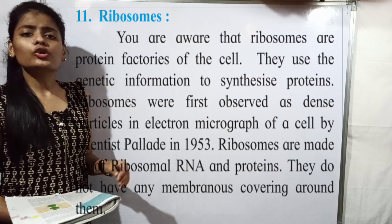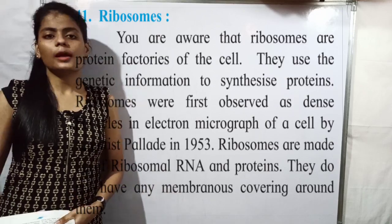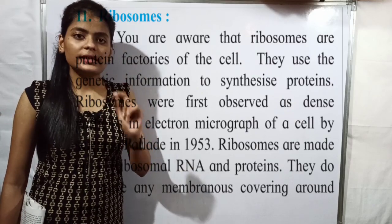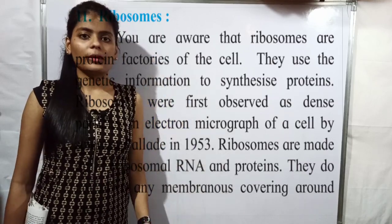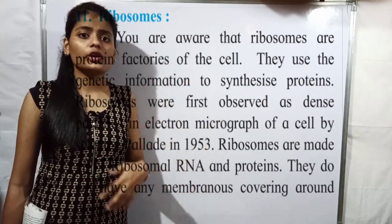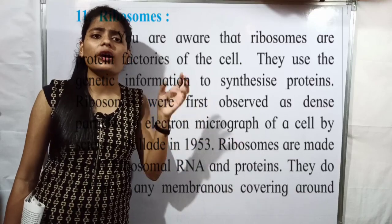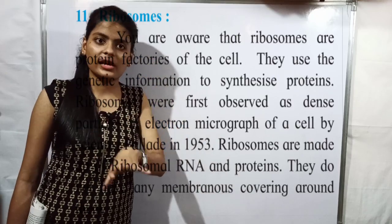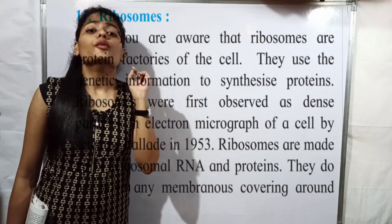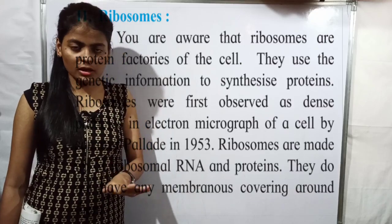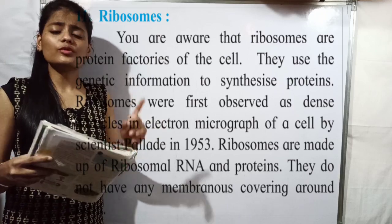Ribosomes are the protein factories of the cell because they produce proteins. They use the genetic information stored in the nucleus to synthesize proteins. The nucleus contains DNA, and DNA carries genetic information — information about which proteins will be found, which genes are present, and what is needed to keep the body healthy. So proteins are made with the help of genetic information stored in the nucleus.